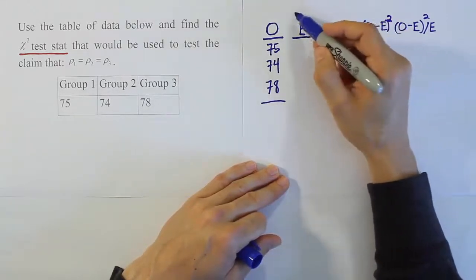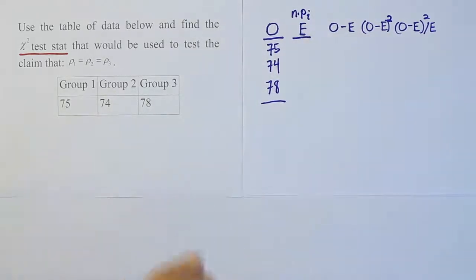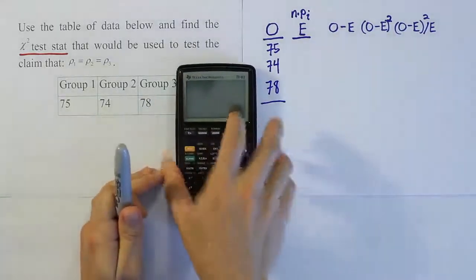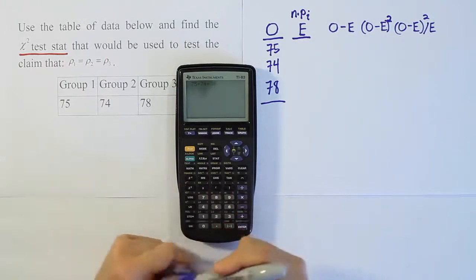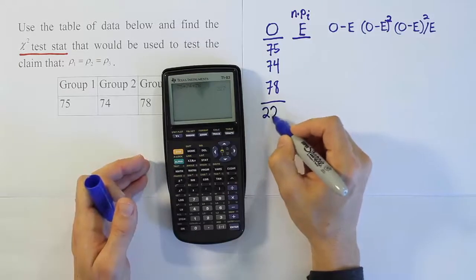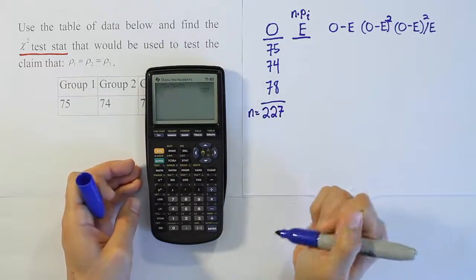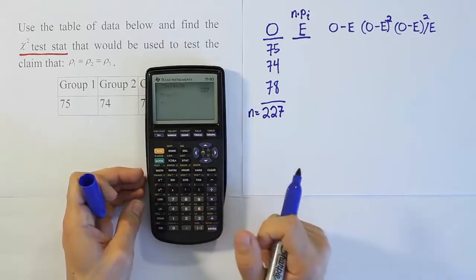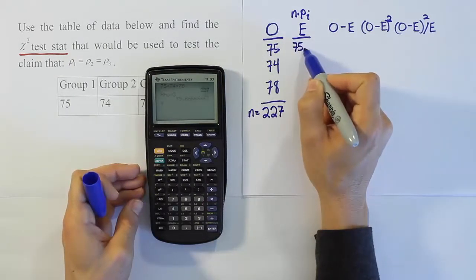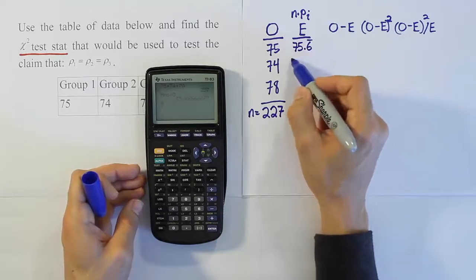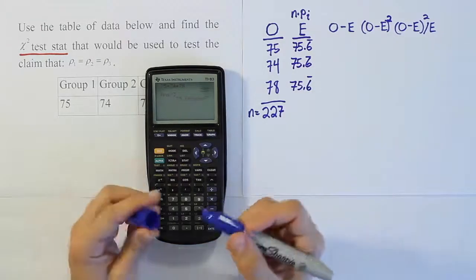To do the expected column, remember we're going to use the formula n times pi, but since each of them are just a third, we're going to get the total here for the observed column, that will tell us what n is. And then from there, we'll divide that by three, and each of these expected will be that number. So 75 plus 74 plus 78 gives us a total of 227. So 227 is the N for the problem. So that's our observed total, but it's also our N. Now that we know our N is 227, let's divide it by three. If we divide that by three, we get the answer 75.6 repeating, and that's essentially what's going to go in each of these expected value cells, because we expect a third of the people to be in each category. So there it is, 75.6 for each category.